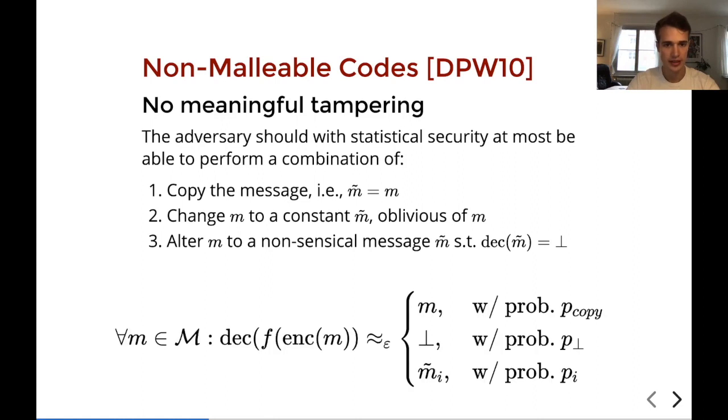To formally present this, we ask that the tampering experiment - the experiment where you take some message, you encode it, apply the tampering function f and then decode - this should be epsilon close in statistical distance to just a combination of these copy, constant, or scramble operations. And that the distribution on the right is independent of the message. We say that the coding scheme is epsilon non-malleable with respect to the class of functions that f belongs to if this is true for all f.